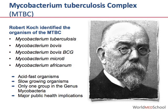The etiological agent of tuberculosis was initially recognized by Robert Koch in 1882, and all of the organisms within the complex show acid-fastness, are slow growing, and are important because of the public health implications associated with their transmission and ability to cause disease.